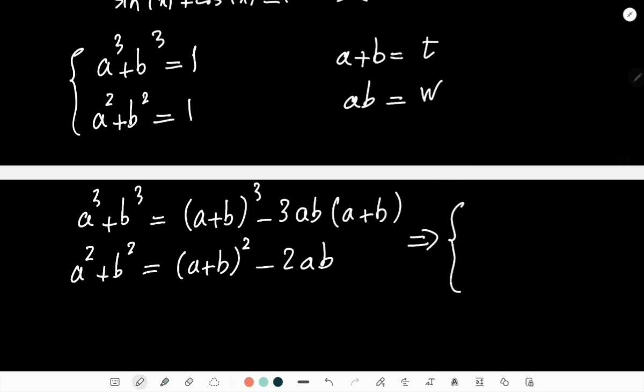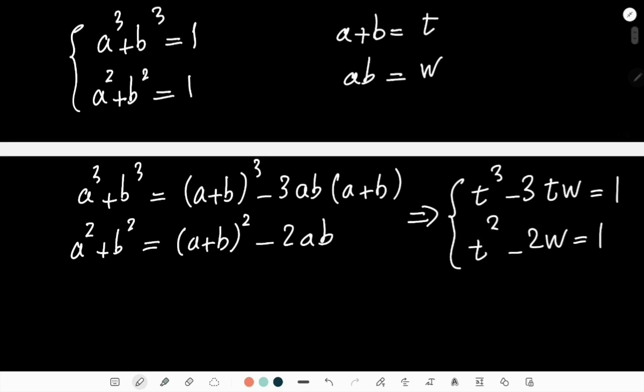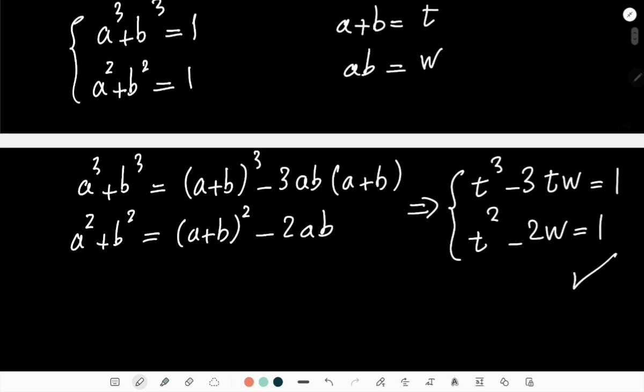which is t³ - 3tw = 1. And here I get t² - 2w = 1. Now I have to solve this new system of equations, but this is relatively easy. I show you why.